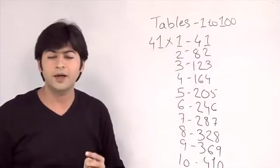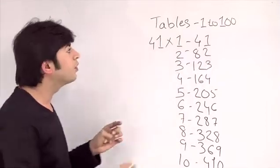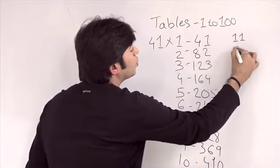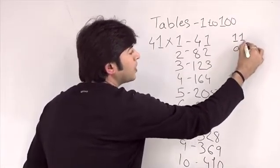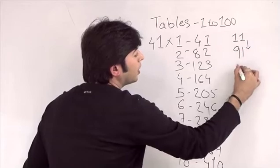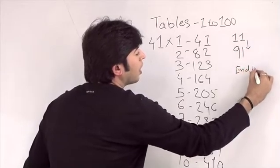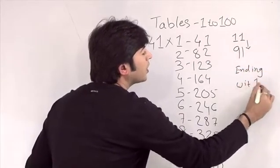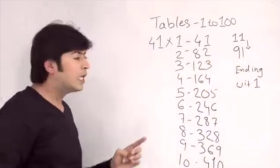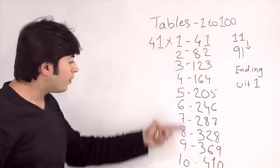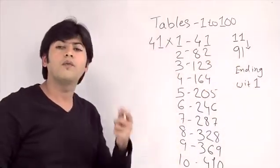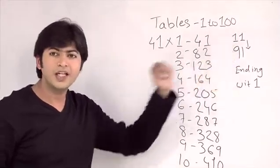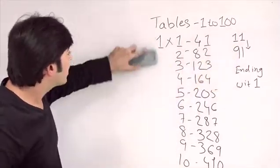Now you need to know where you are going to use this formula. This kind of formula is useful for tables from 11 to 91 — meaning all numbers ending with 1. So this method works for all 9 tables: 11, 21, 31, 41, 51, 61, 71, 81, and 91. Let's check one more example: 71.